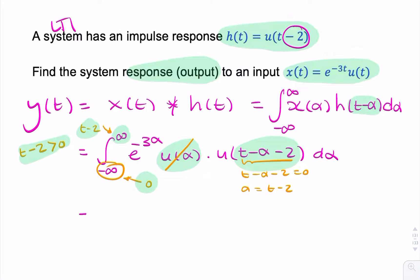y of t is equal to the integral from 0 to t minus 2 of e to the minus 3 alpha d alpha.